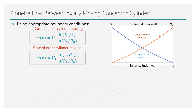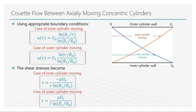The velocity is non-linear and varies inversely as the ratio of the logarithm of the radii of the two cylinders. Since we know the velocity field, it is straightforward to obtain the shear stresses.